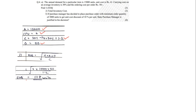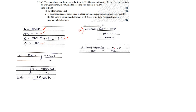For total inventory cost we need three components. Material cost = A into P = 15,000 into 4 = 60,000 rupees. Total ordering cost = annual demand upon EOQ into O = 15,000 upon 1118 into 50 = 670.8 rupees.